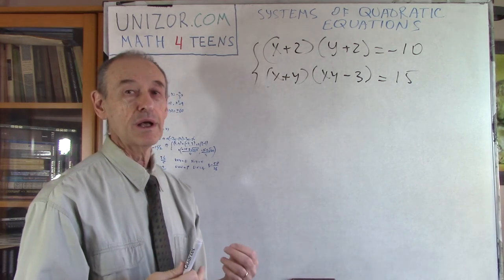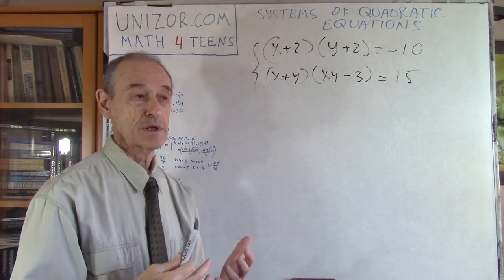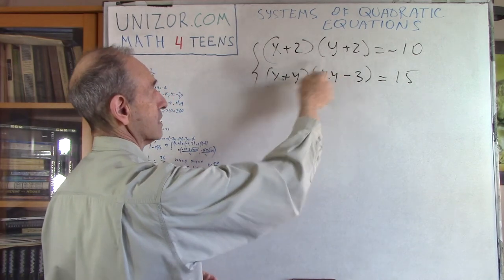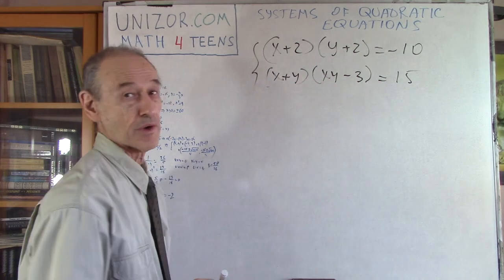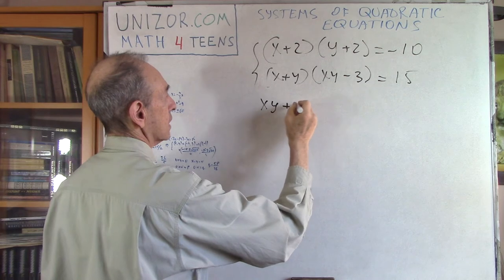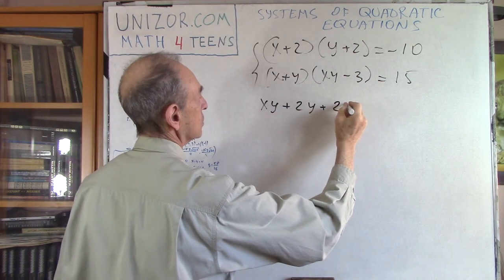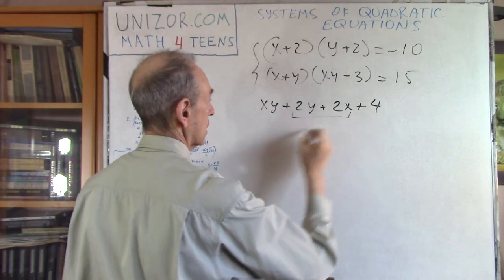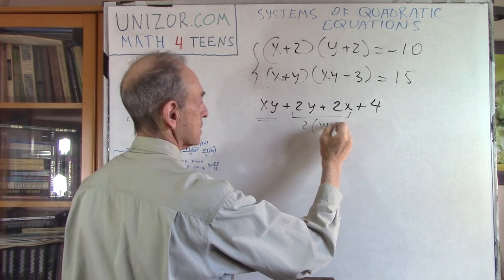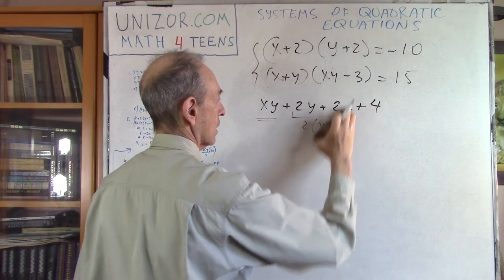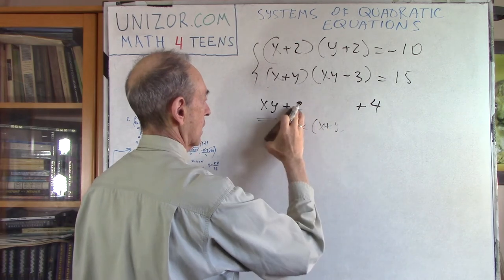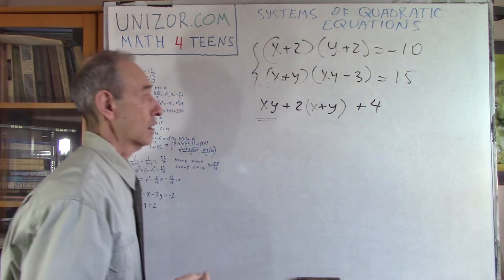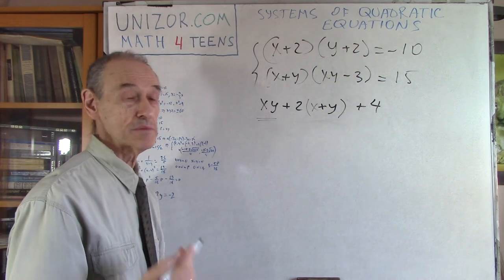These are very typical symmetrical combinations of variables. They are plus or they are multiplication. But this is not actually X plus or X times Y, right? However, let me just open the parenthesis in the first one. I have XY plus 2Y plus 2X plus 4. Aha! You see? This is XY, symmetrical. And this is 2 times X plus Y.